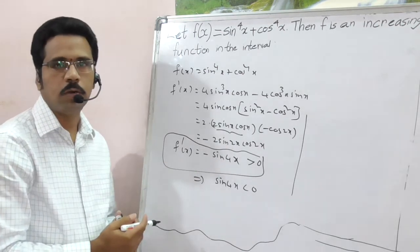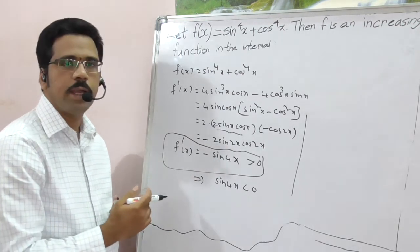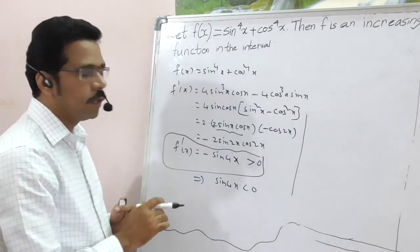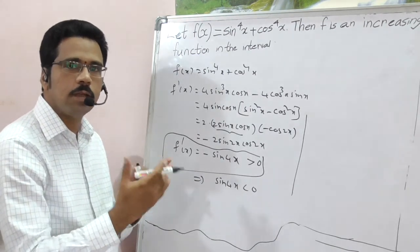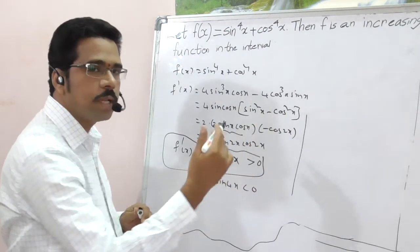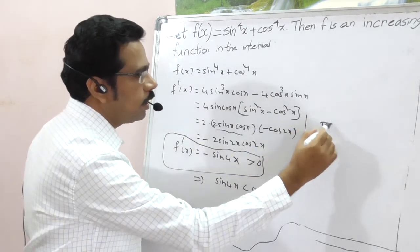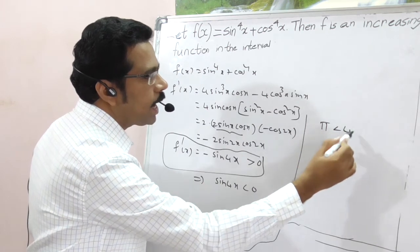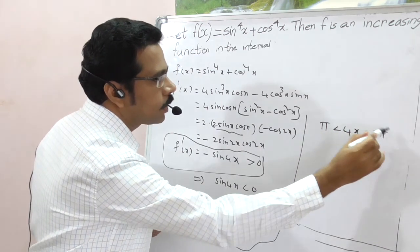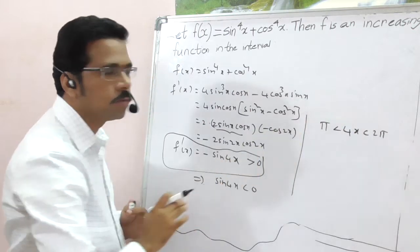That means, sin is less than 0. In which area is sin less than 0? That should be in third as well as fourth quadrant. That is π plus θ to 2π minus θ. Therefore, here 4x lie in between π and 2π. Third and fourth quadrant.